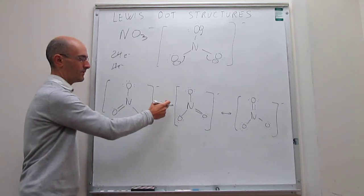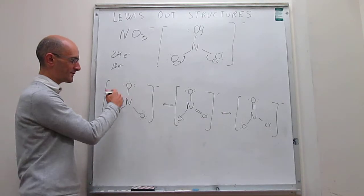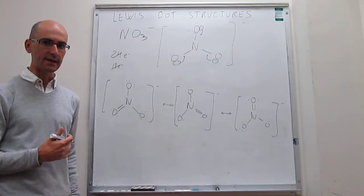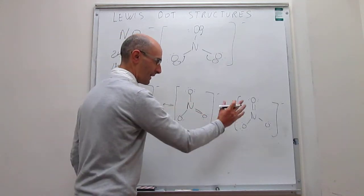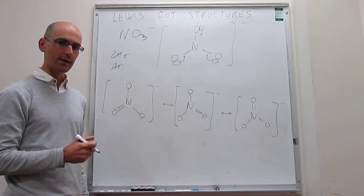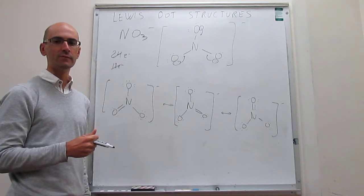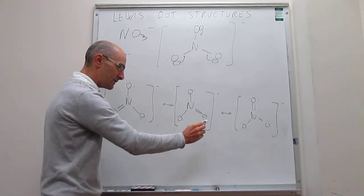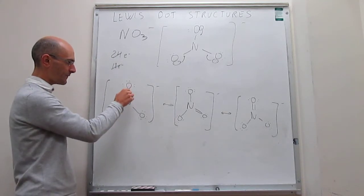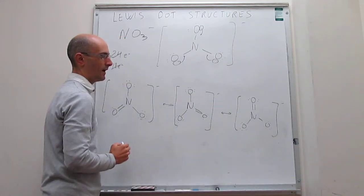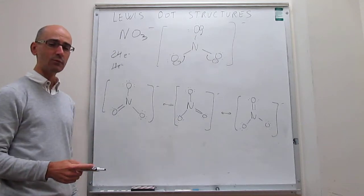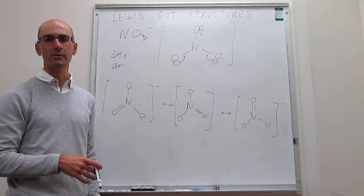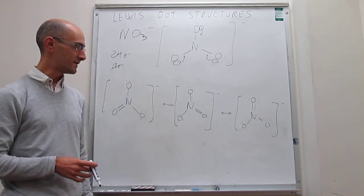The double-headed arrows between these structures don't mean the molecule evolves from one to another — this is not a dynamic equilibrium where the double bond flips around between oxygen atoms. It simply indicates that all three structures are equally likely. Taking an average, each nitrogen-oxygen bond has a single bond in two of the three structures and a double bond in the remaining one, giving an average bond order of 1.33 between nitrogen and oxygen in the nitrate ion.